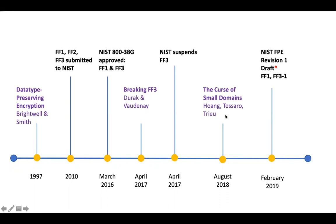Later, another paper was published by a different set of researchers — Hung at the University of Florida. It was called 'The Curse of Small Domains,' and it discusses how using format-preserving encryption for small domains such as a zip code or a credit card CCV — where you have just a few hundred or a few thousand potential values — makes it easy to attack the algorithm. In response, NIST issued a revision in February 2019, creating a slight variant of FF3 called FF3-1. FF1 was found to be reliable and left as is.